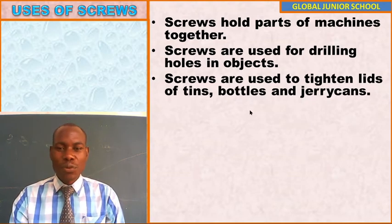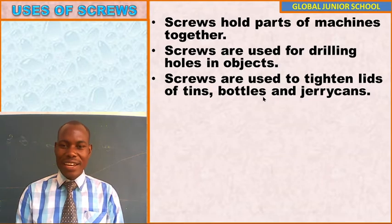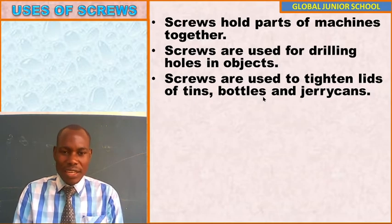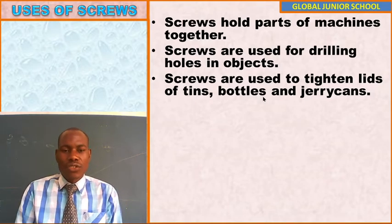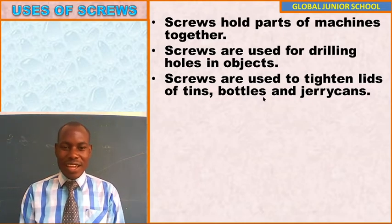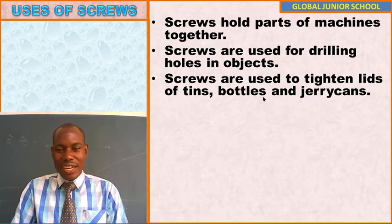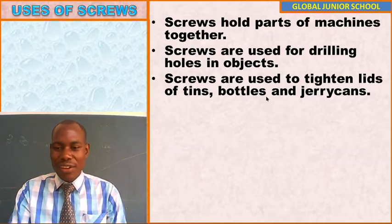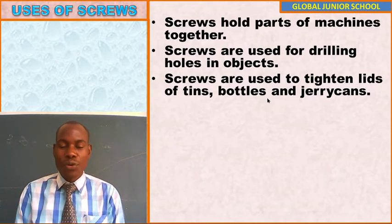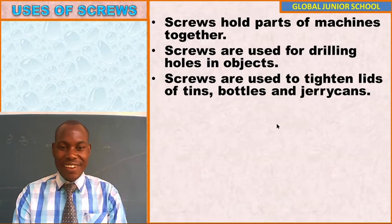Number three, screws are used to tighten lids of tins, bottles, and jerry cans. A jerry can lid uses a screw to tighten it so the water does not pour out. A soda bottle also contains a lid with a screw in it — for you to tighten it so that the soda does not pour out, you need a screw.